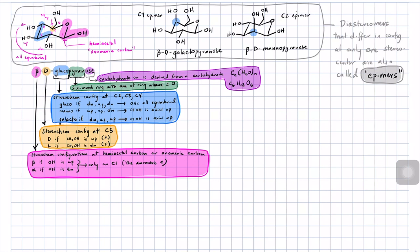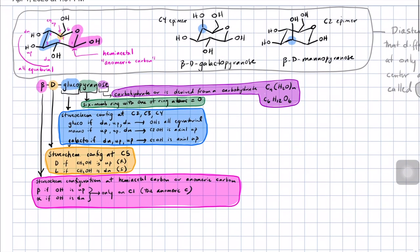Even though we've talked about the meanings behind all of these names, we're going to use shorthand. We might call this molecule beta-D-glucose — though that technically refers to the open-chain form rather than the cyclic hemiacetal form. We'll also use beta-D-galactose as shorthand for beta-D-galactopyranose, and beta-D-mannose as shorthand for beta-D-mannopyranose.